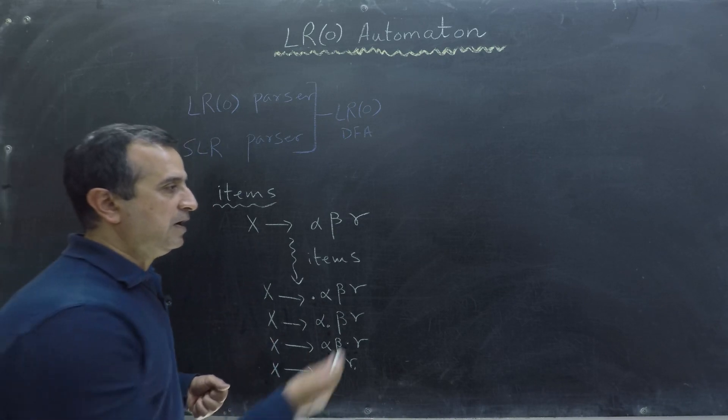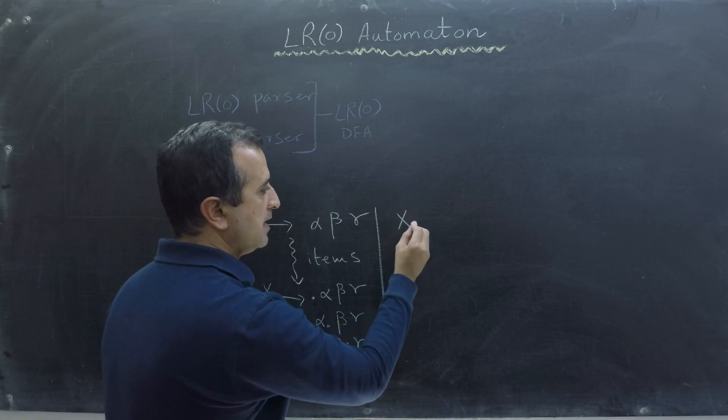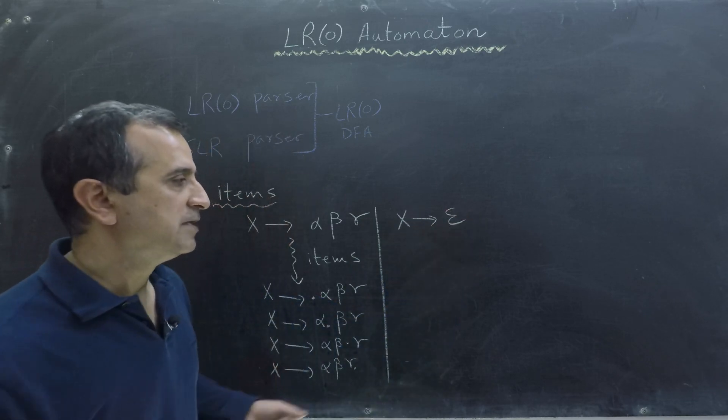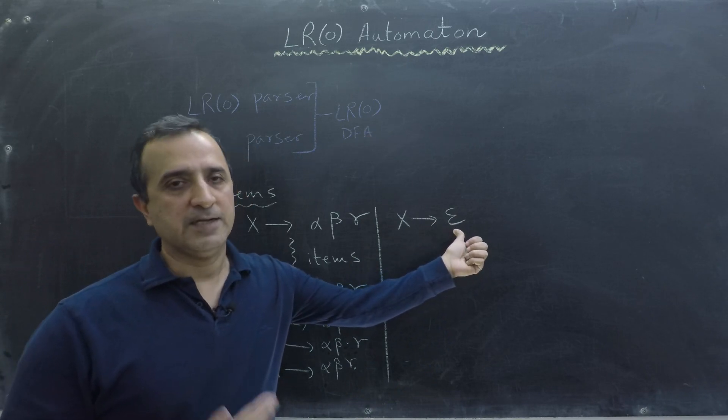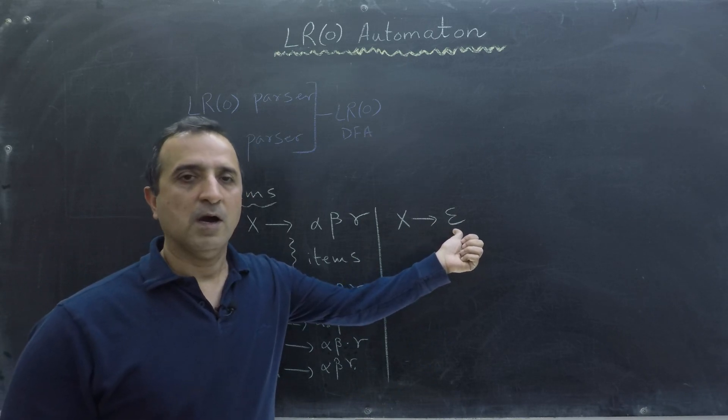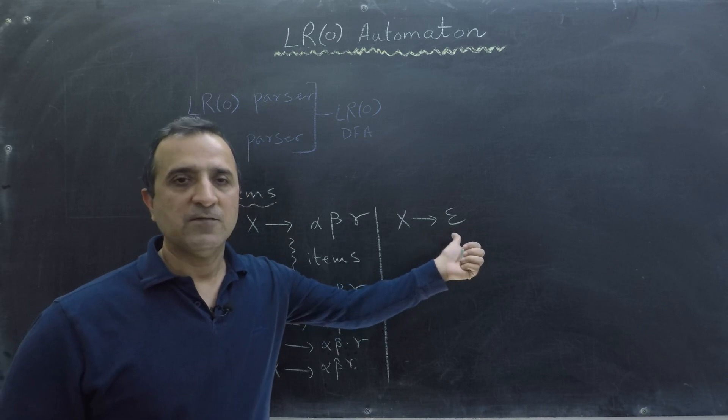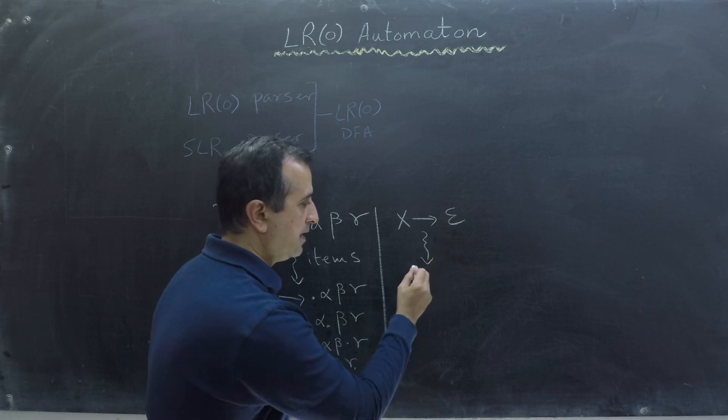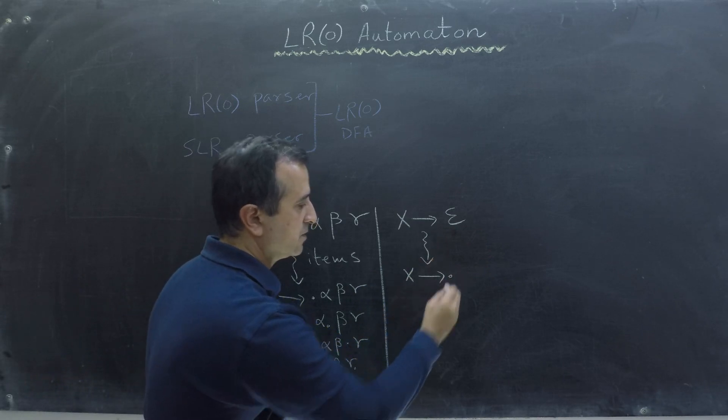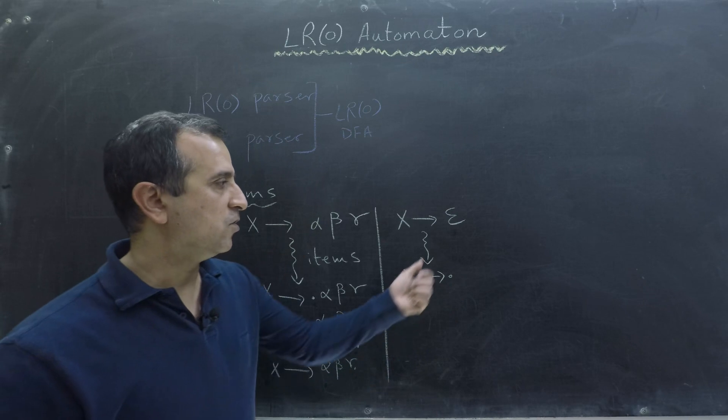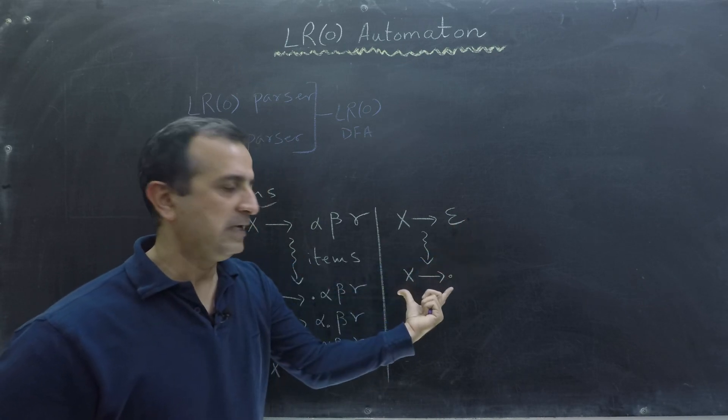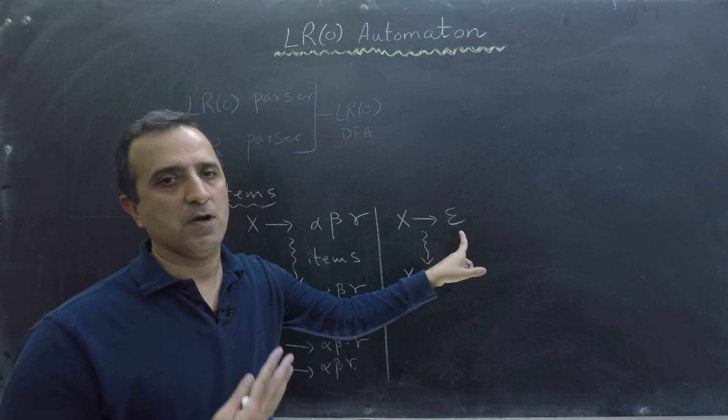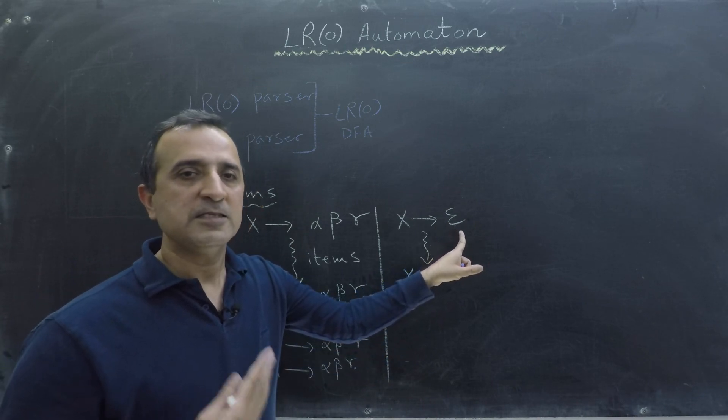But what about our production which is x goes to epsilon? Now note that epsilon is neither a terminal nor a non-terminal. So this production will have a special item which is x goes to dot. There will be no dot before epsilon or after epsilon, only this x goes to dot because epsilon is neither a terminal nor a non-terminal. It's a special production.